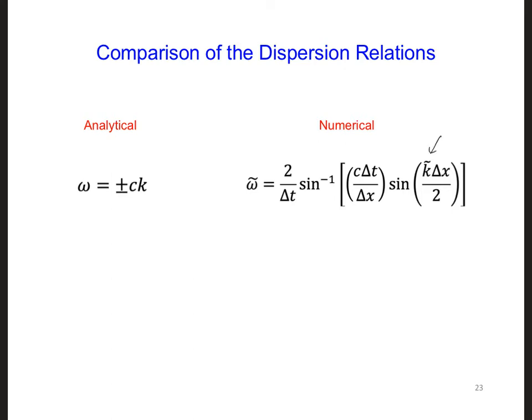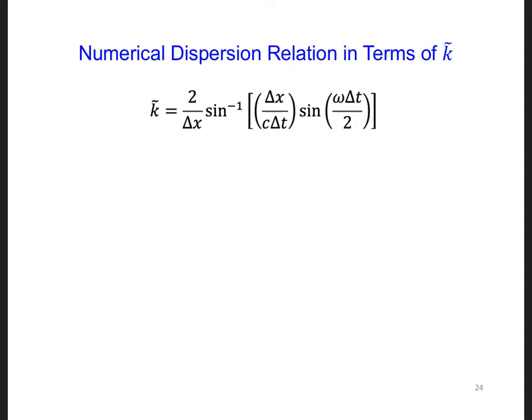Then we will analyze the form of the equation and see if there are scenarios in which the numerical wave number might be complex. After rearranging the numerical dispersion relation to solve for the numerical wave number, we get what's shown here. Looking at this equation, we can see that k̃ can be a complex number if the quantity in the brackets is greater than 1.